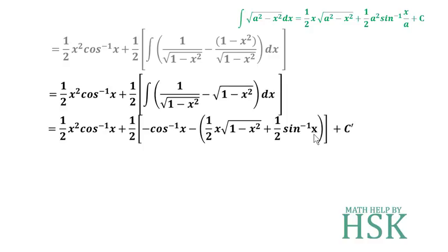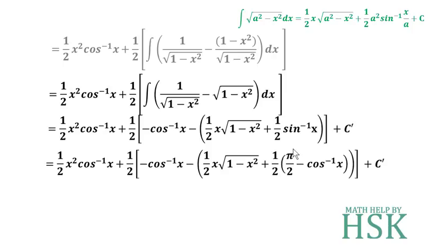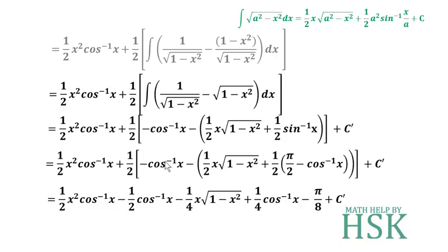Now we substitute sin⁻¹(x) = π/2 − cos⁻¹(x). This allows us to express everything in terms of cos⁻¹(x). Multiplying (1/2) into the bracket, we get: −(1/2)cos⁻¹(x) from the first term inside the bracket.